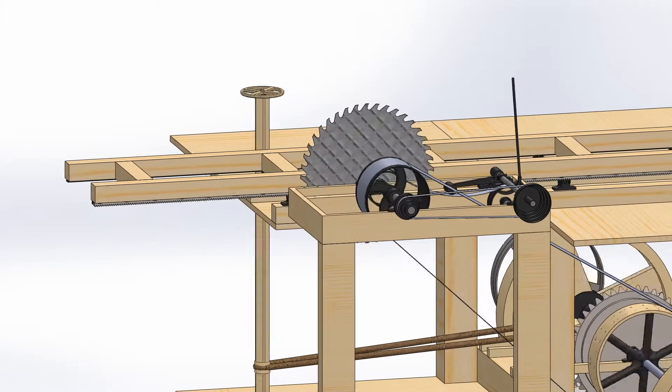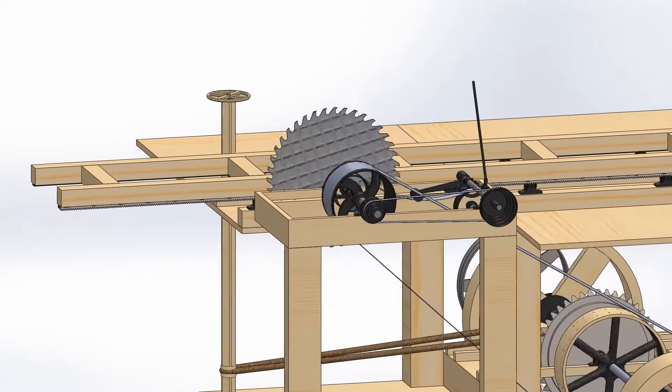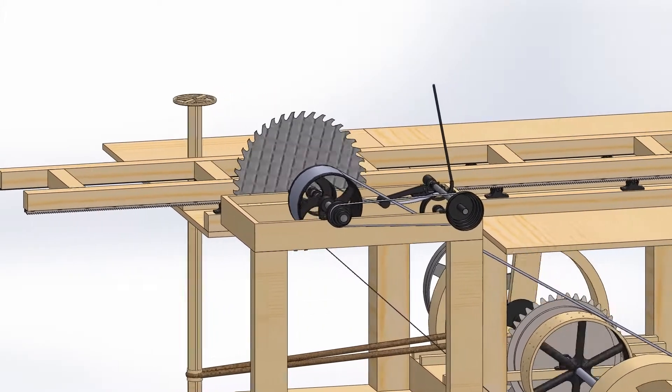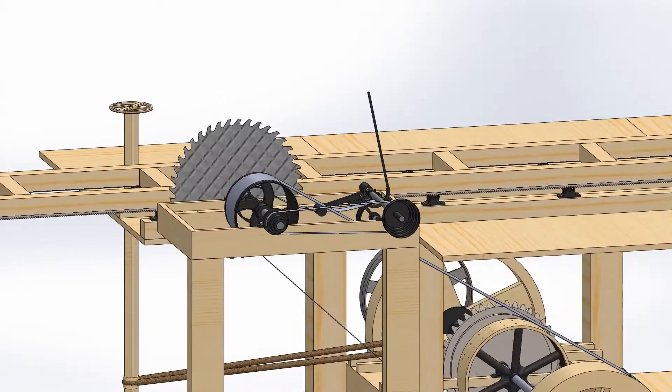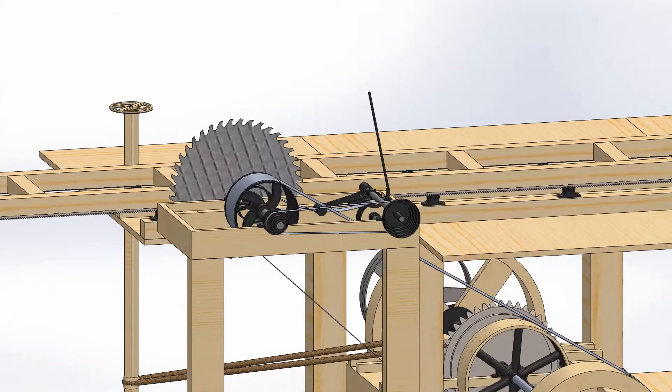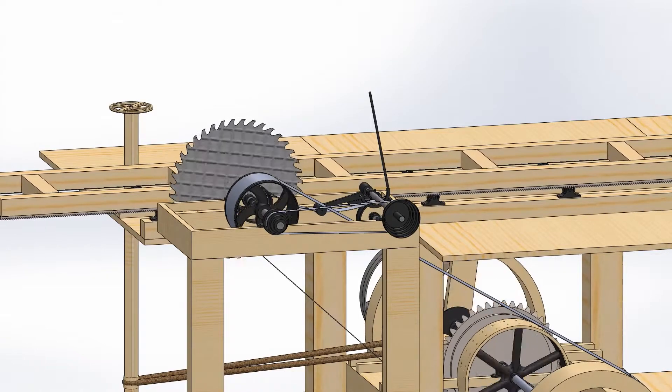To reverse the carriage, the lever is pushed the other way, causing a pulley to tighten the normally slack belt connecting the saw shaft to the pinion shaft. This clockwise motion of the pinion shaft drives the rack in reverse, back to its starting position.